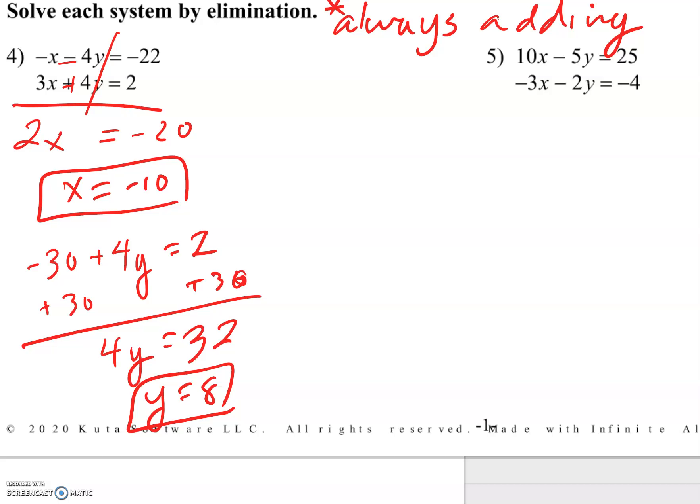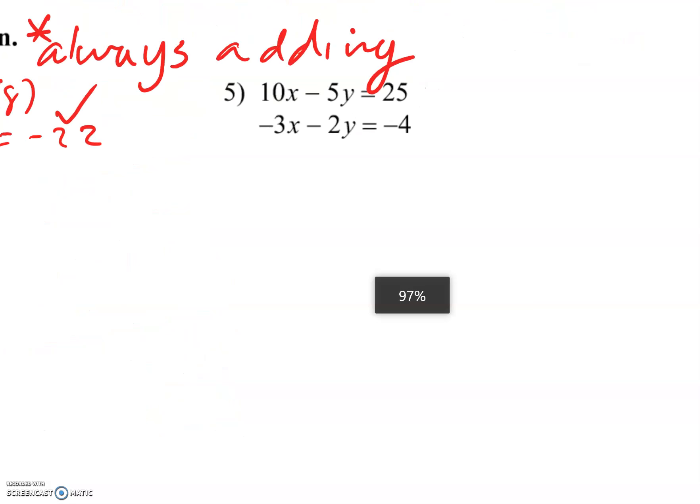We can plug those back in. Negative 10 minus 4 times 8 equals negative 10 minus 32 equals negative 22. It'll work if I plug it into the other one as well. That one was super easy. How about the next one?